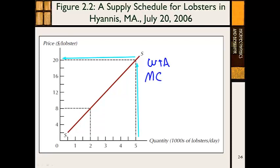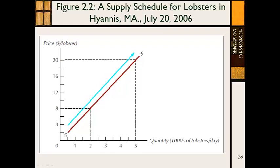This is a marginal cost — the cost to supply that last 1,000 lobsters. If the price was $16 per lobster, they would supply 4,000. You keep raising the price incrementally, and to get that last lobster, the price would have to go all the way up to $20. You could supply smaller amounts of lobsters for fewer dollars, but marginally, to get that last lobster onto the market, the price would have to be $20. So $20 is the marginal cost. This is the law of supply: what's generally observed to be true is that as the price of a good goes up, producers will produce more, and as the price goes down, producers will produce less.